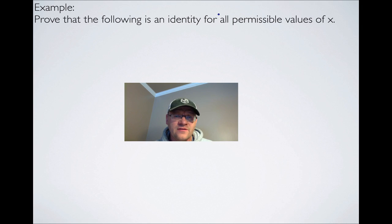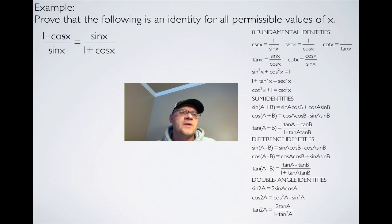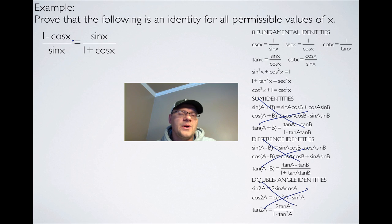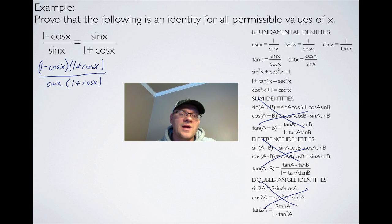Here's another example: prove that the following is an identity for all permissible values of x. We want our identities available. There are no sum, difference, or double angle terms, so I'll eliminate those. It's hard to decide which side is more complicated, so I'll work with the left-hand side: 1 minus cosine x over sine x. Looking at the right-hand side, I'll eventually need 1 plus cosine x on the bottom, so I'll multiply the top and bottom of the left side by 1 plus cosine x — this is the same as multiplying by 1.